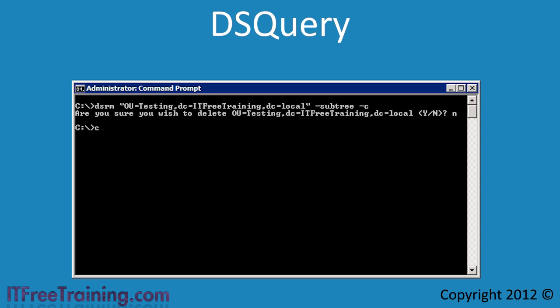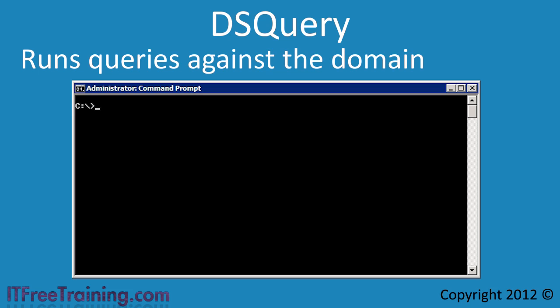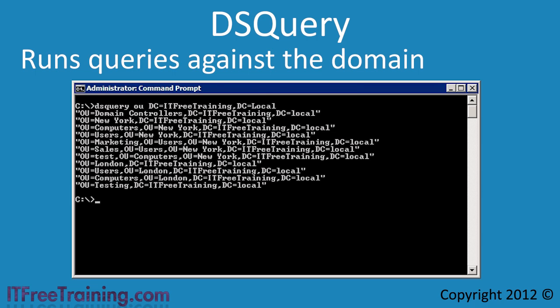The last command is dsquery, which can be used to find information about particular objects in a domain or filtered down to one area. For example, you could show all objects in one OU, or show all users in the domain with surnames starting with A to K. In this example, I will use the parameter 'OU' and enter the distinguished name for the domain. Once run, all organizational units in the domain will be listed. Using the query command can get you a lot of information about objects in your domain very quickly.